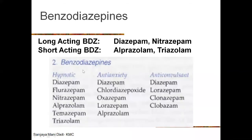Benzodiazepines can be classified as short-acting or long-acting. Long-acting ones include diazepam and nitrazepam; short-acting ones include alprazolam and triazolam. They can also be classified by effect: hypnotics, anti-anxiety agents, or anticonvulsants. The same drug can have all three effects — diazepam appears in all three categories — while some drugs, like chlordiazepoxide, are now used mainly as an anti-anxiety agent rather than as a hypnotic or anticonvulsant.